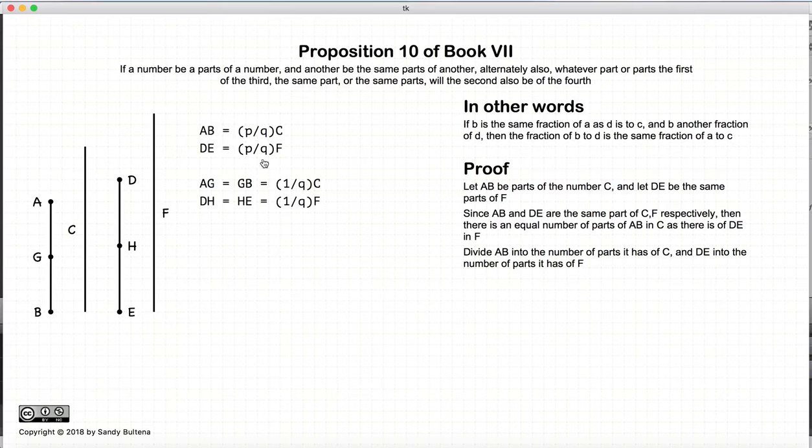Now what we're going to do is since AB is some number of parts of C, and DE is the same number of parts of F, we're going to divide AB and DE into that number of parts, or you can look at it that we take whatever the parts are of C.